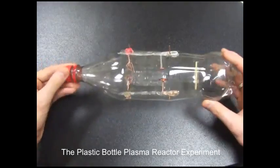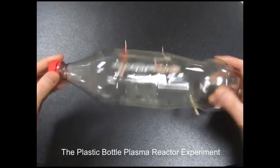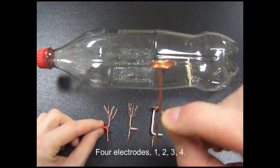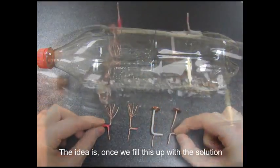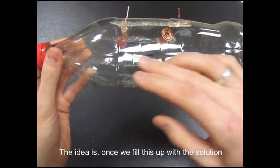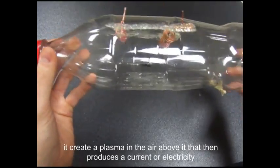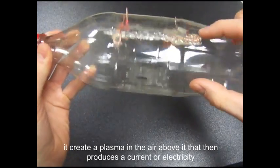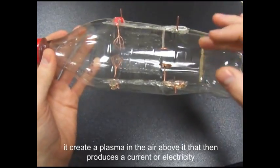This is the plastic bottle plasma reactor experiment. Four electrodes. One, two, three, and four. And the idea is that once we fill this up with the solution, it creates a plasma in the air above it that then produces a current.